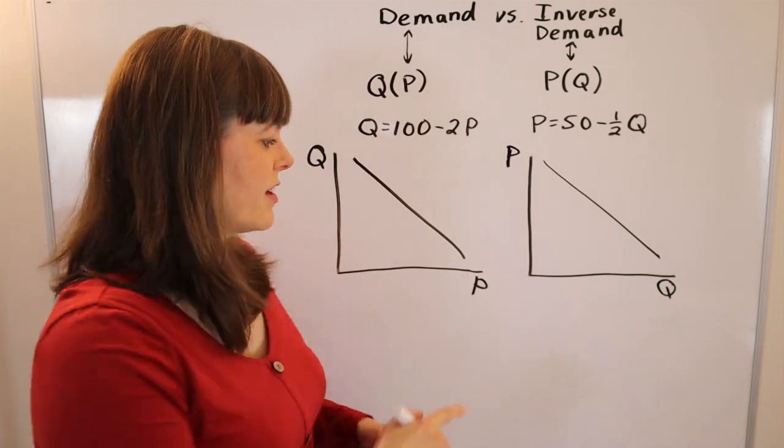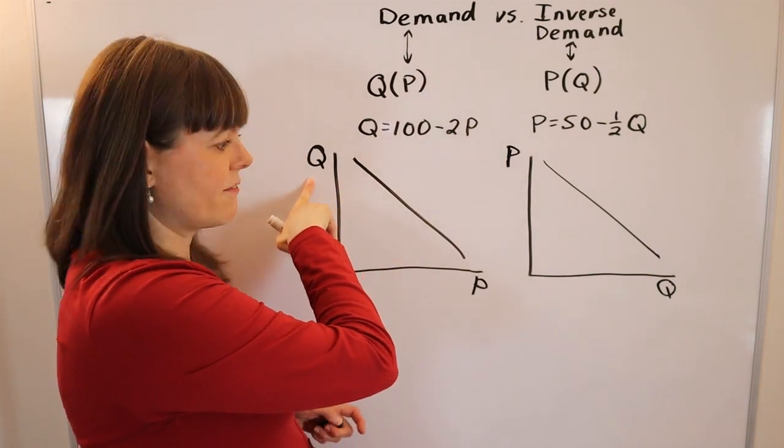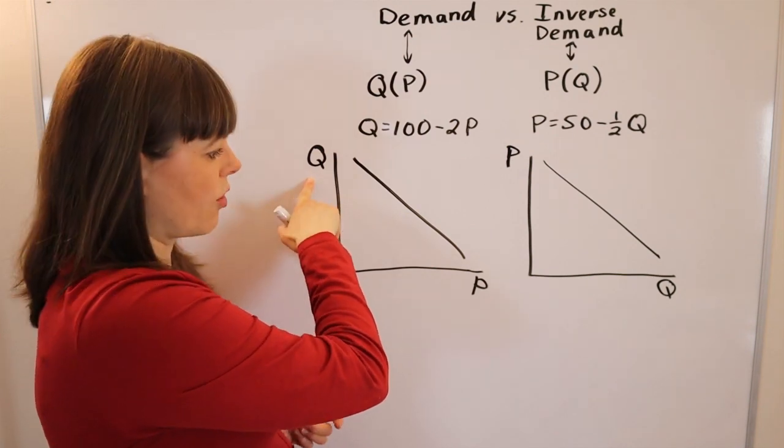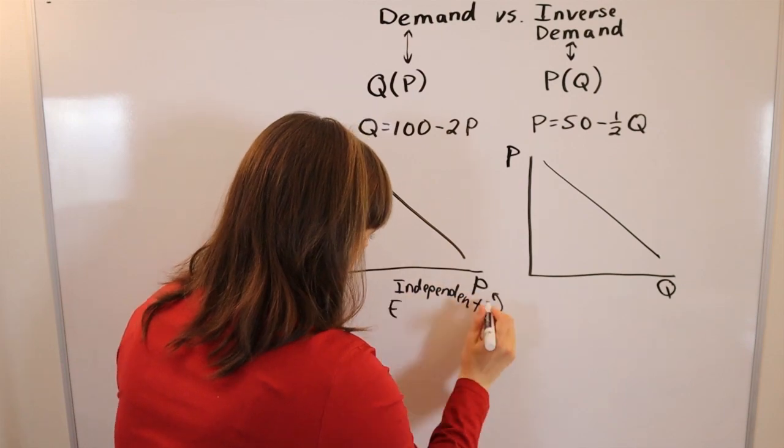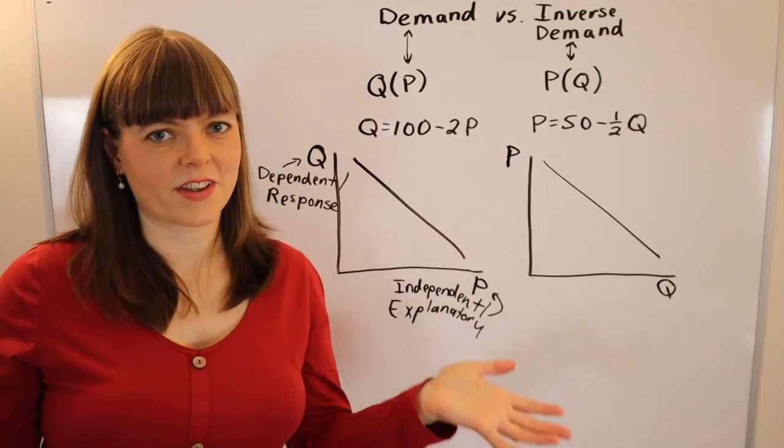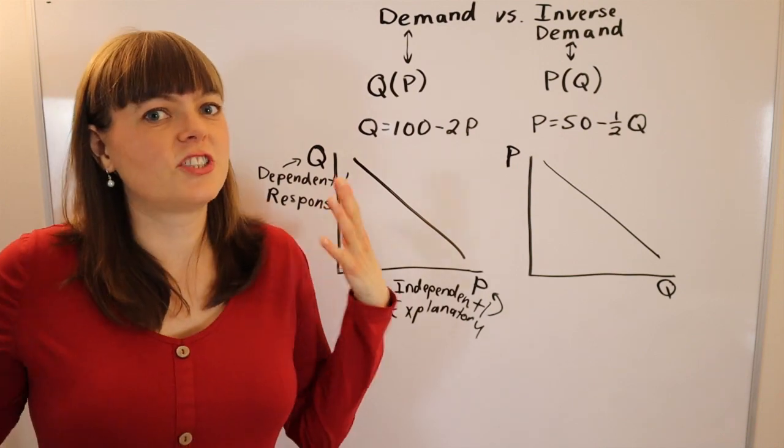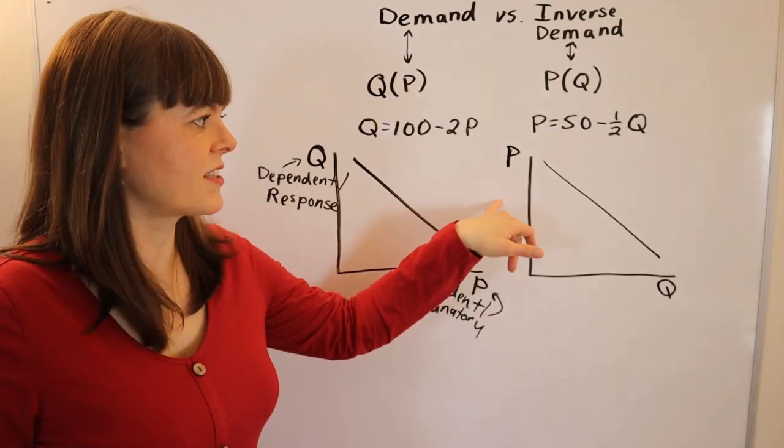That is generally because you have the independent variable on the x-axis and the dependent variable on the y, or the explanatory variable and the response variable. This is going to be true of most scientific papers, the way graphs generally work. And yet this is not the way economists generally set up our graphs.